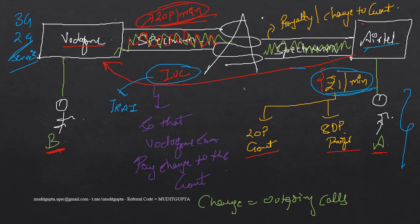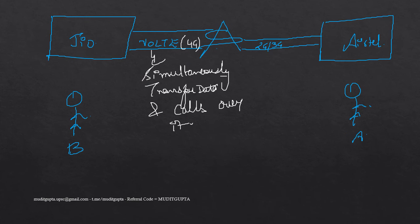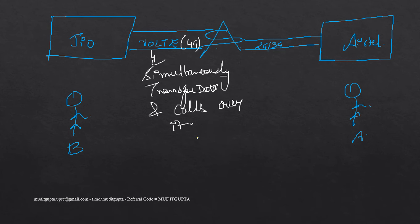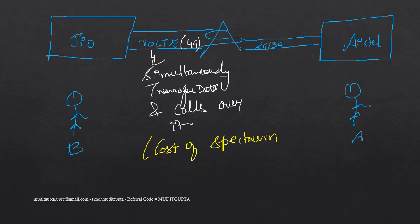The frequency and spectrum capacity is less in 2G/3G. VoLTE — the 4G network — is the newest form of network. It was because of this reason that Mukesh Ambani led Jio Telecom was able to offer very low tariff prices. When Jio came, there was a lot of revolution in the telecom industry, because Jio used VoLTE — a pure 4G network in which data and voice are transmitted simultaneously and the cost of spectrum is very minimal.